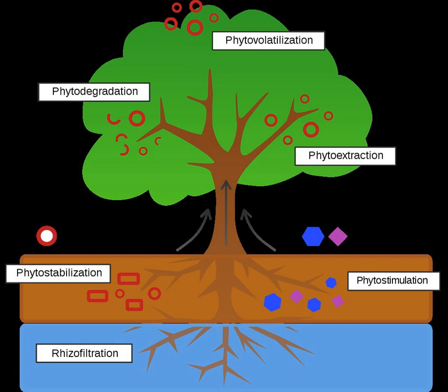Phytovolatilization is the removal of substances from soil or water with release into the air, sometimes as a result of phytotransformation to more volatile and/or less polluting substances. In this process, contaminants are taken up by the plant and through transpiration, evaporate into the atmosphere. This is the most studied form of phytovolatilization, where volatilization occurs at the stem and leaves of the plant; however, indirect phytovolatilization occurs when contaminants are volatilized from the root zone. Selenium and mercury are often removed from soil through phytovolatilization. Poplar trees are one of the most successful plants for removing VOCs through this process due to their high transpiration rate.